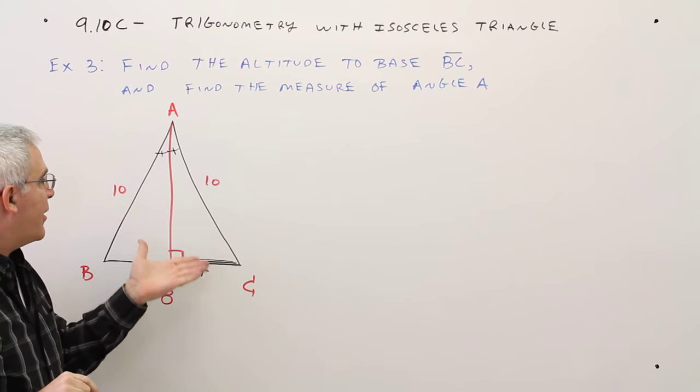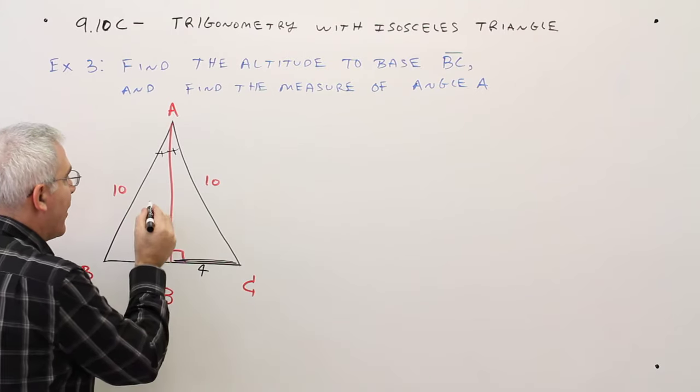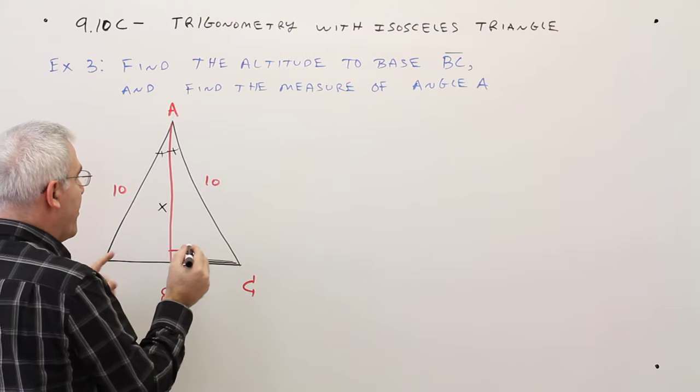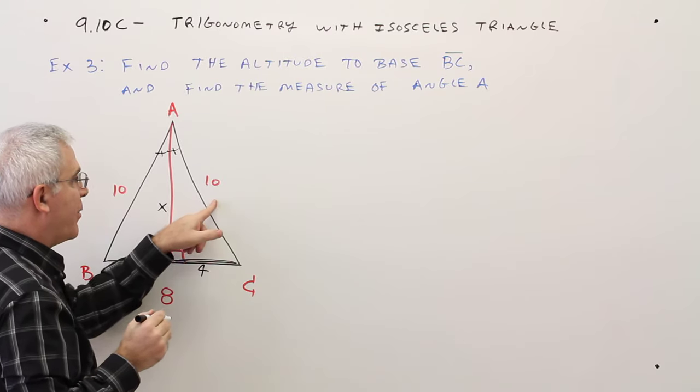Well now I could just simply use the Pythagorean Theorem. I'll call this x over here to find that height. So leg squared plus leg squared equals hypotenuse squared.